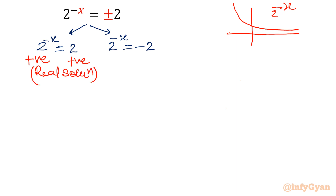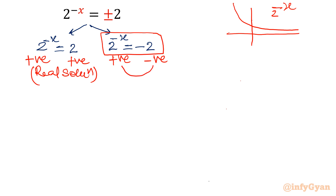We can conclude some real solution. Now coming to the second equation: the left hand side is positive, but the right hand side is negative. This is not possible in real mathematics, so here we will be getting a complex solution — confirmed.